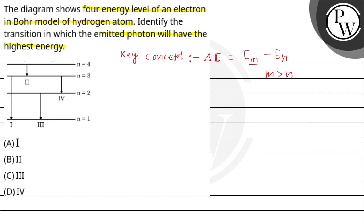Delta E equals Em minus En. The energy of the nth orbit is given by minus E-naught times Z-squared divided by n-squared. For hydrogen, Z equals 1, so this simplifies to minus E-naught divided by n-squared.